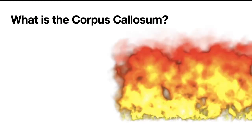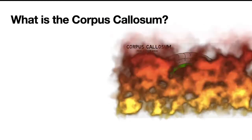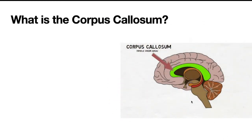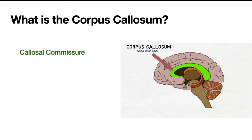Well, the corpus callosum is a part of the brain — it's this green part over here — and it's a very big part. The corpus callosum is sometimes called the callosal commissure.